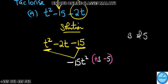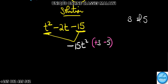Then next thing, instead of writing this term here, we're going to replace it with the factors. So we're going to have t squared, then plus 3t, minus 5t, minus 15.